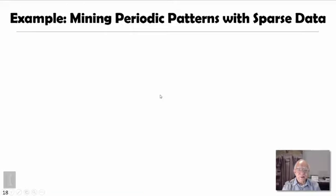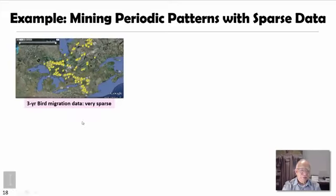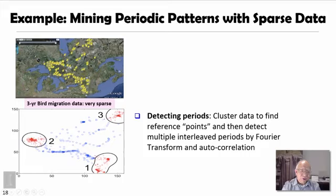Here is an interesting example of mining periodic patterns with sparse data, using a real dataset about birds flying in North America. This dataset accumulates three years of bird migration data, which is very sparse. Based on the dense points, taking those dense regions as reference spots, you can find periodic odysseys: in winter the birds fly south, in summer they fly back north, and in between they may visit other locations for various activities.